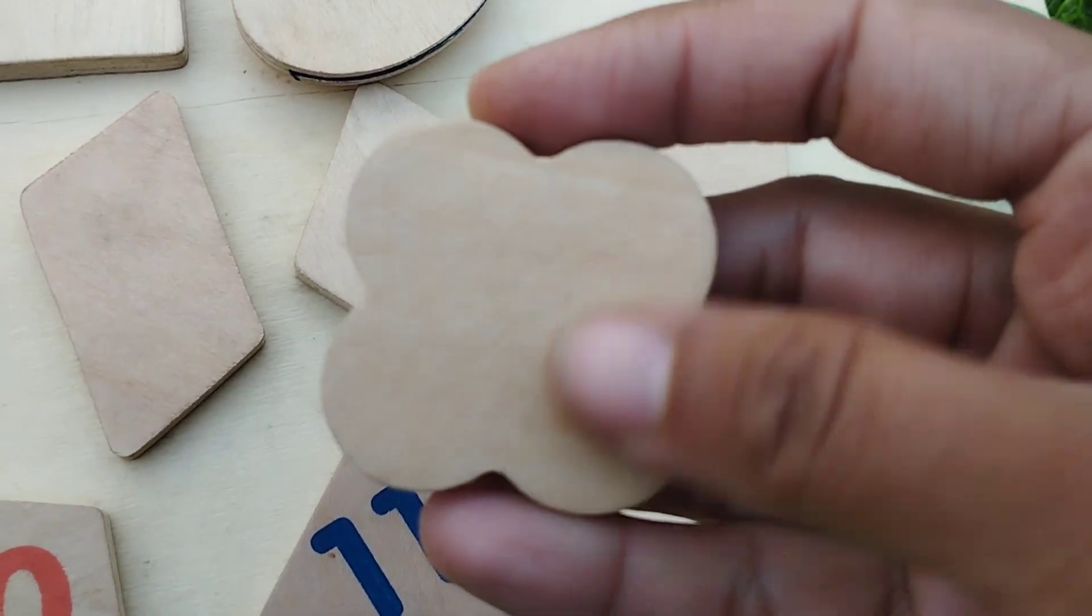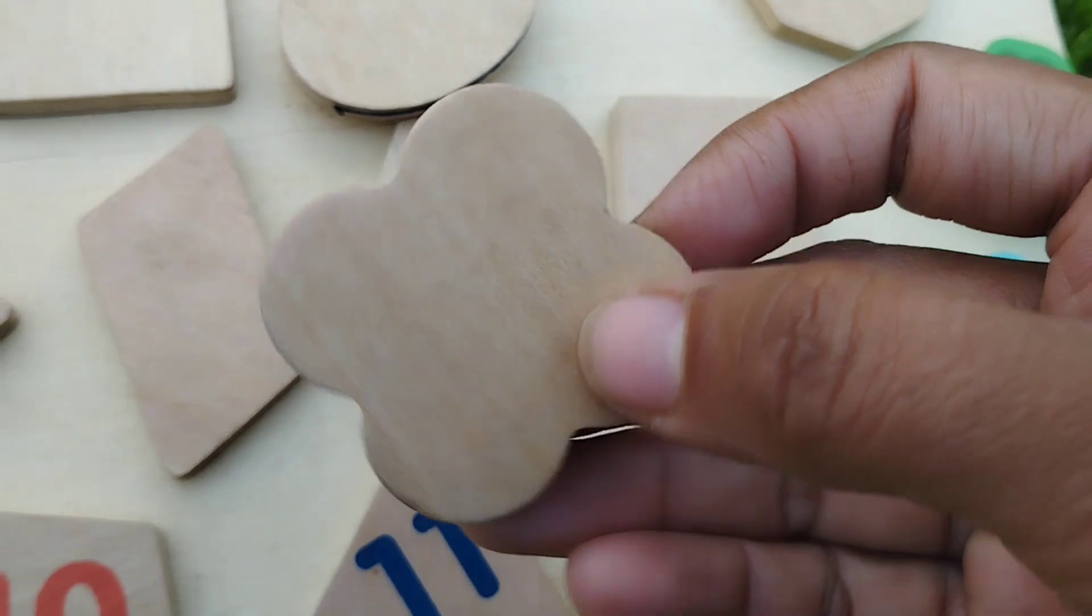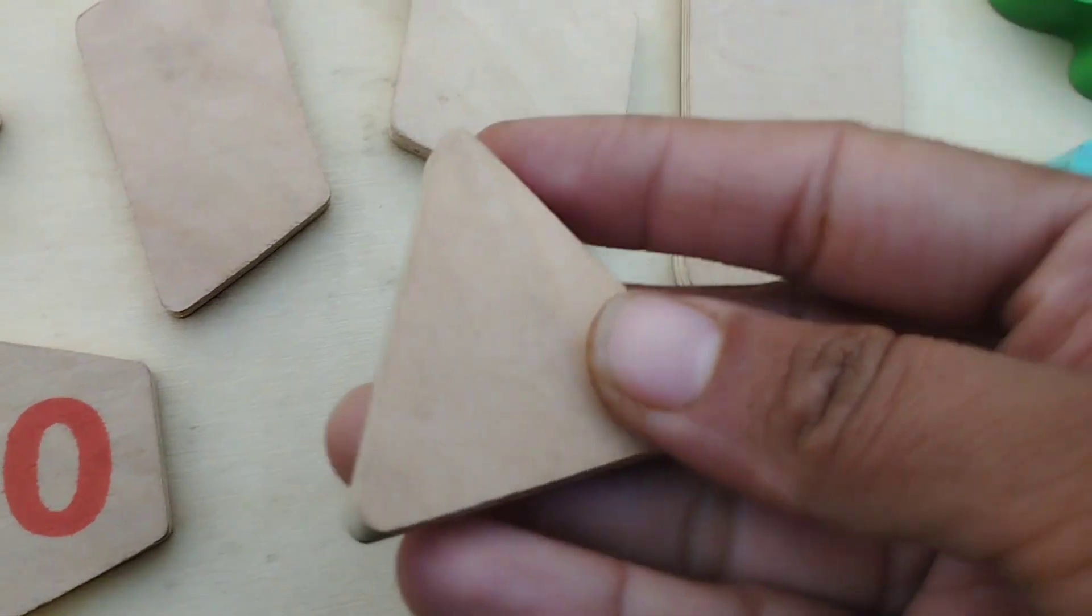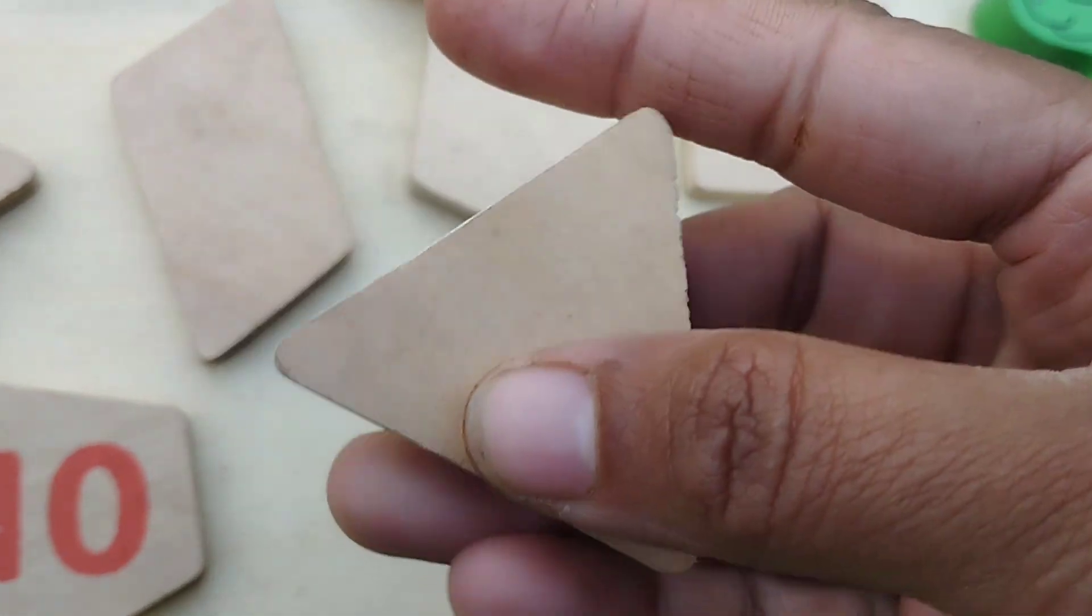Flower shape. This is a flower shape and the number is 12. Triangle and the number is 11.